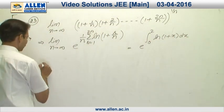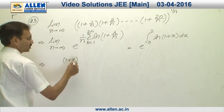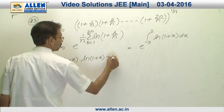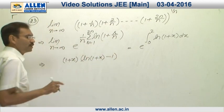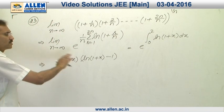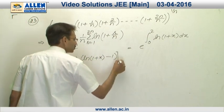Now, we will integrate ln 1 plus x. The integration is 1 plus x ln 1 plus x minus 1. Because we know the integration of ln x is x ln x minus x. Therefore, for integration of ln 1 plus x will be 1 plus x ln 1 plus x minus 1. The limits are 0 to 2.